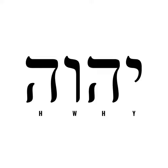Scholars refer to God's four-letter name as the Tetragrammaton. We don't know with certainty what the correct pronunciation of the Tetragrammaton is. Likewise, the meaning of the Tetragrammaton is difficult to nail down precisely. Scholars believe its meaning is some variation of 'I exist because I exist,' 'I will exist because I will exist,' 'I am who I am,' 'I will be who I will be,' or 'I am that which exists.' It is this name that God revealed to Moses at the burning bush.